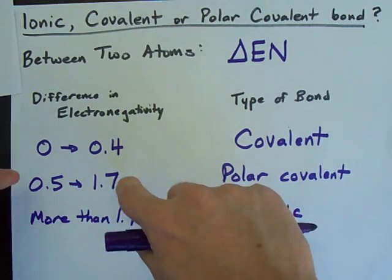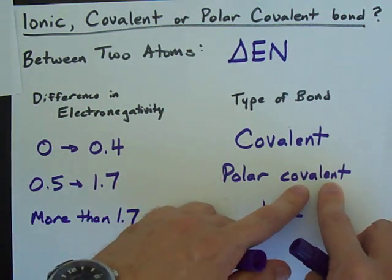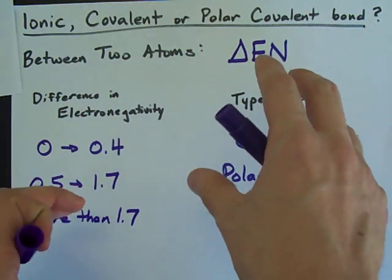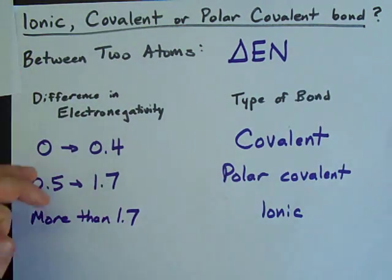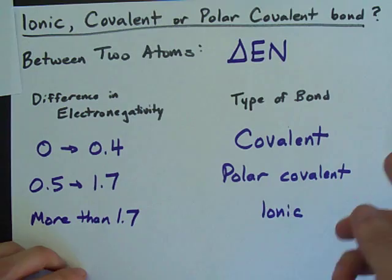And if it's somewhere in between, it'll be partially covalent, but there will also be a bit of a positive charge on one and a bit of a negative charge on the other, and so it's polar. We call it polar covalent.